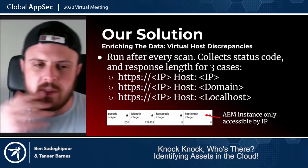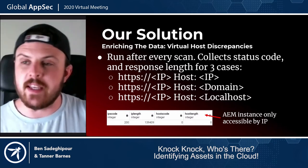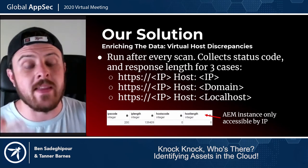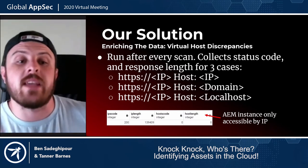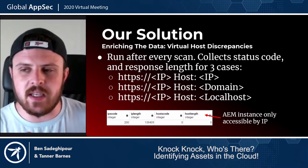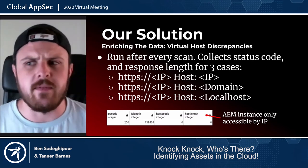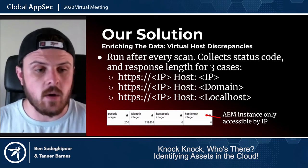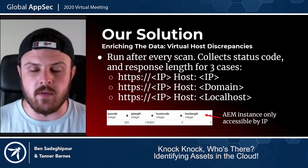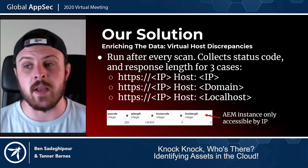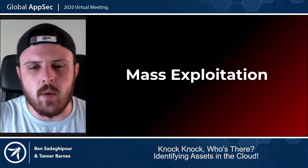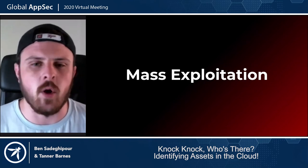For virtual host discrepancies — after every scan we take our targets of interest and normally run this against diff results. We look for the status code and response length for three specific cases: when we hit it by IP with a host header of the IP address, when we hit it with the IP with a host of the domain it returns, and then the IP with a host name of localhost. As an example, we found an AEM instance on a bug bounty target that was vulnerable. By accessing it by IP only we got a response, but hitting it by host header of the domain returned nothing — so something was blocking access by domain but letting you in by IP.